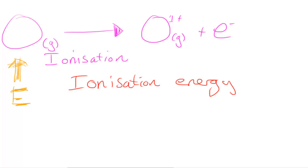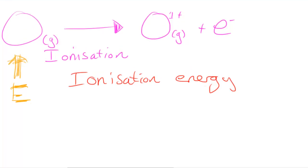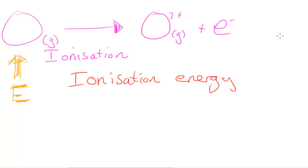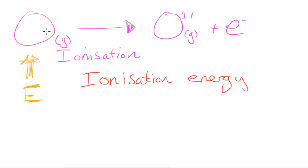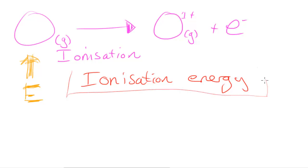You may be thinking: oxygen is usually a gas, so that makes sense, but why are we ionizing it in a gaseous state? Why not ionize liquid oxygen or solid oxygen? The main reason we don't do it in the solid or liquid state is that it's much easier in the gaseous state. There's technology we can use to cause ionization there, and it's easier to measure the energy input as well.